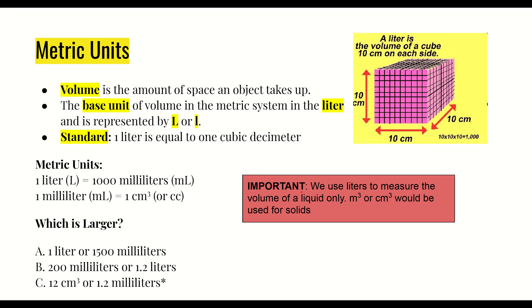One really important distinction: we use liters to measure the volume of a liquid, and meters cubed or centimeters cubed are used for solids. So our two SI units for volume are: liters for liquid, and cubic meters (meters cubed) for solids. A helpful way to remember this is that 'liter' and 'liquid' both start with the letter L. If it's a solid, we use cubic meters — and by process of elimination, if you remember one, you can get the other.